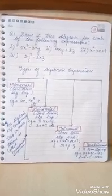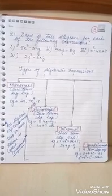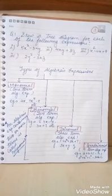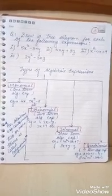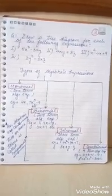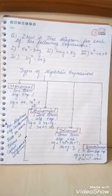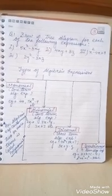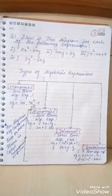Second is binomial: an algebraic expression with two terms is known as a binomial. For example, 4x − y, 3x + 7, etc. Next is trinomial: a three-term algebraic expression is known as a trinomial. For example, 4x² + 3x + 7, and 3x + y − z.